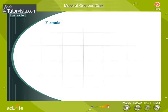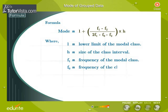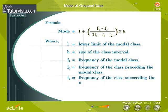The formula to find the mode of grouped data is as follows. L is the lower limit of the modal class. H is the size of the class interval. F1 is the frequency of the modal class. F0 is the frequency of the class preceding the modal class. F2 is the frequency of the class succeeding the modal class.